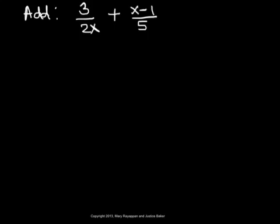We recognize 3 over 2x and x minus 1 over 5 as rational expressions. To add two rational expressions, we must first find the least common denominator. The next step is to rewrite these rational expressions keeping the least common denominator as the denominator for each of them, so the problem translates to adding rational expressions having the same denominator.